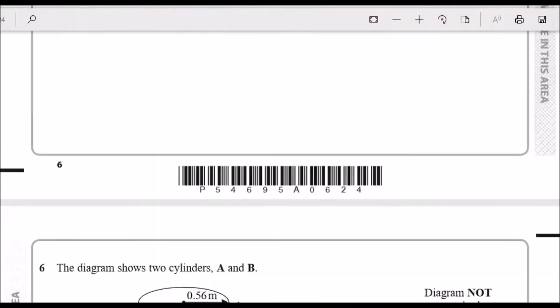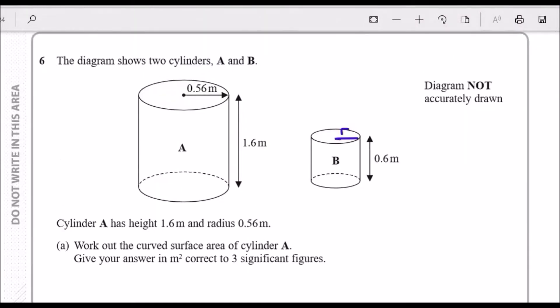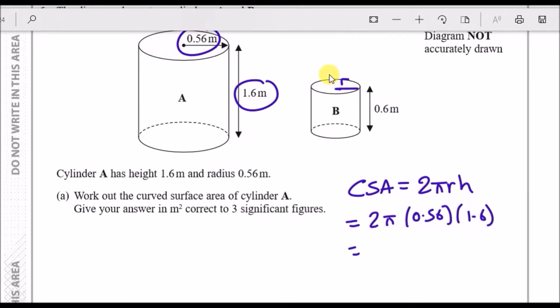So the curved surface area is 2πrh. Now just replace r with 0.56 and height with 1.6. In your calculator, put that in straight away. 2 times π times 0.56 times 1.6. That's about 5.63 meters squared to three significant figures. Easy, not much to do, it's so easy.